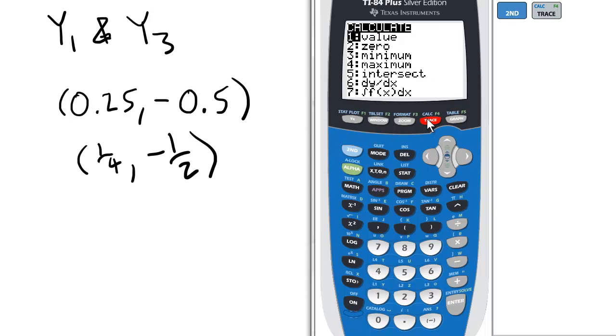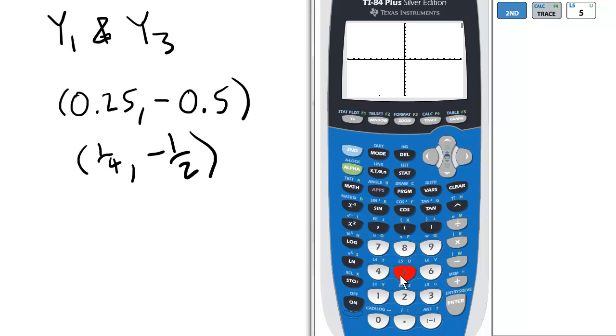Then, from the Calculate menu, select Option 5 for Intersect.